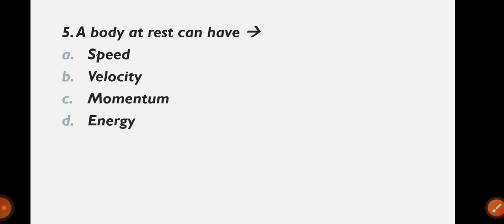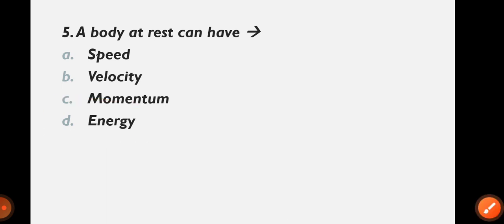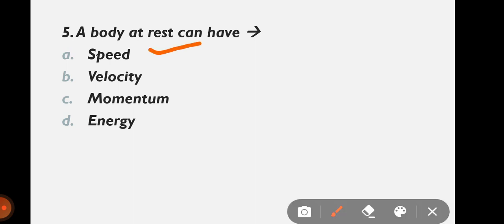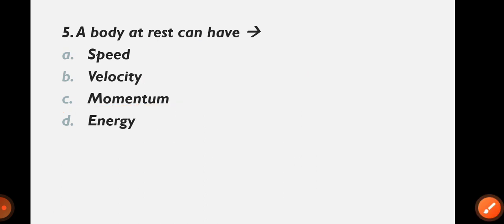Question 5: A body at rest can have — speed, velocity, momentum, or energy? The correct answer is option D: energy. Because energy can be conserved. Speed exists only when an object is in motion, and velocity and momentum also require motion. Energy is something that remains even when a body is at rest.